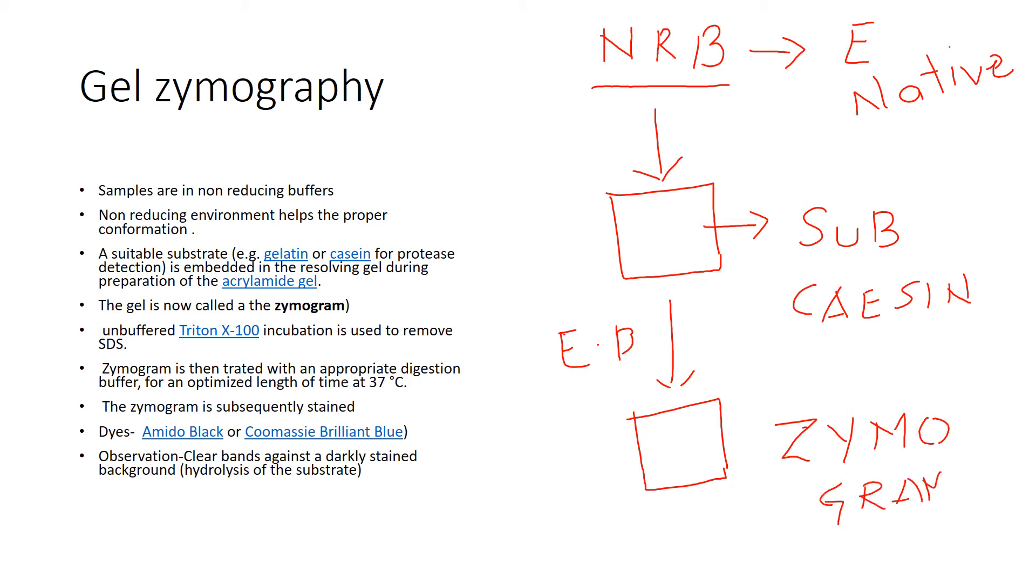This zymogram is then treated with Triton X to remove the SDS from the zymogram, and then it is subsequently stained using either Amido Black or Coomassie Brilliant Blue.